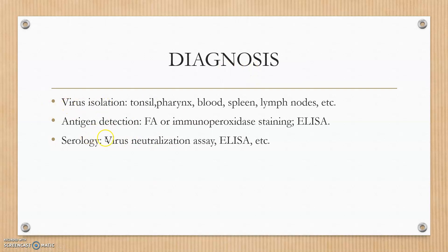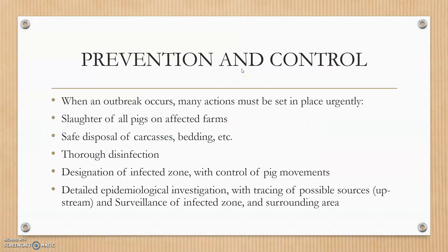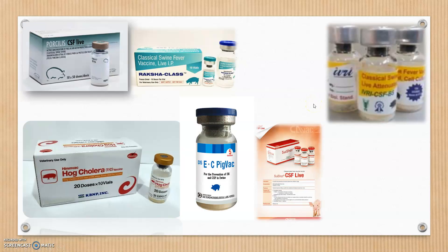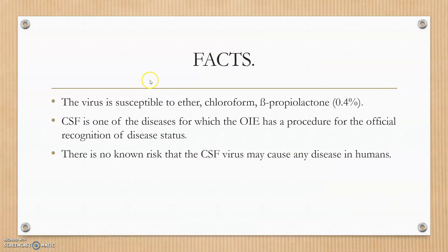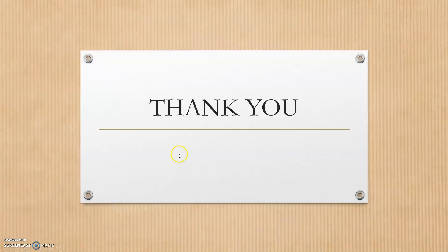For diagnosis, serological tests, antigen detection, and virus isolation can be used. For prevention and control: disinfection of infected zones, control of pig movement, culling of pigs on all affected farms, and mass burial. Vaccines are available, including a live attenuated strain vaccine produced by IVRI. The virus is susceptible to chloroform and beta-propiolactone. CSF is one of the diseases for which OIE has a procedure for official recognition of disease-free status.